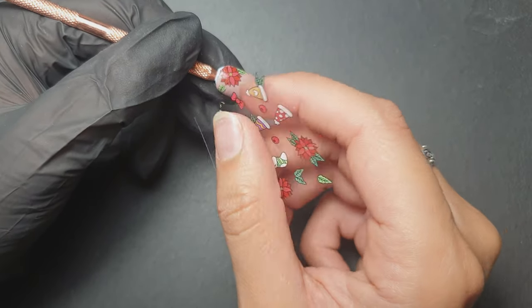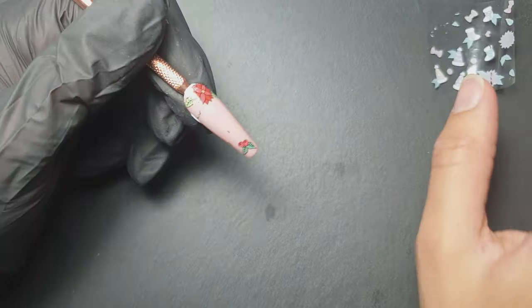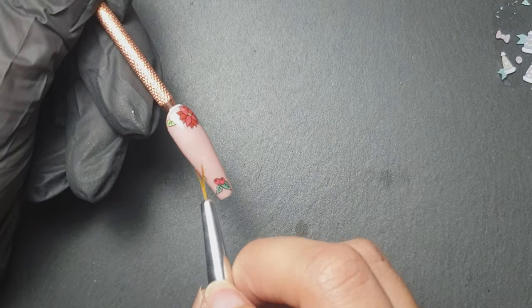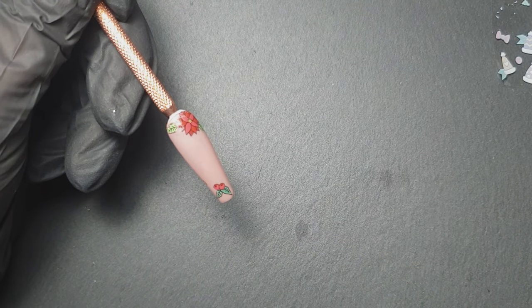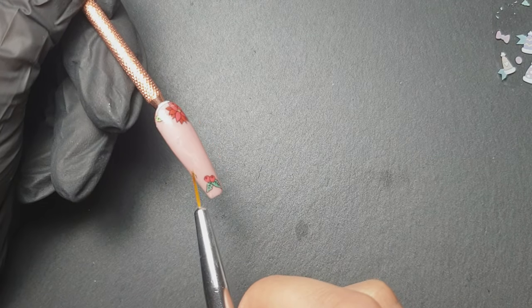I added this extra leaf on and then decided I didn't really like the extra leaf. What I'm doing is just coming in with some acetone on an old nail art brush and just wiping away any of the image that I don't want.